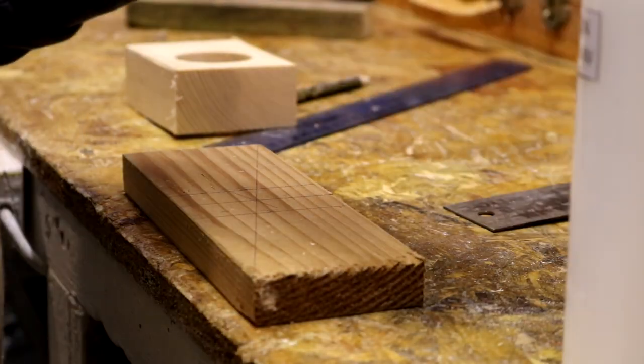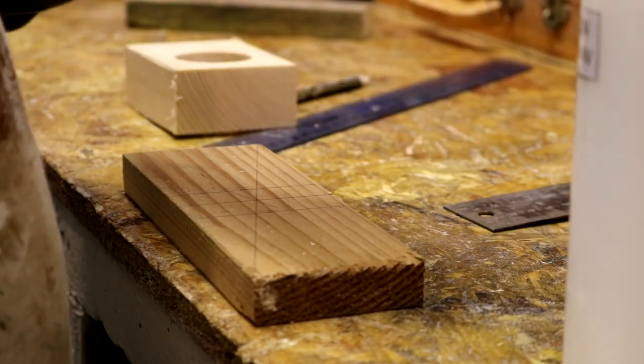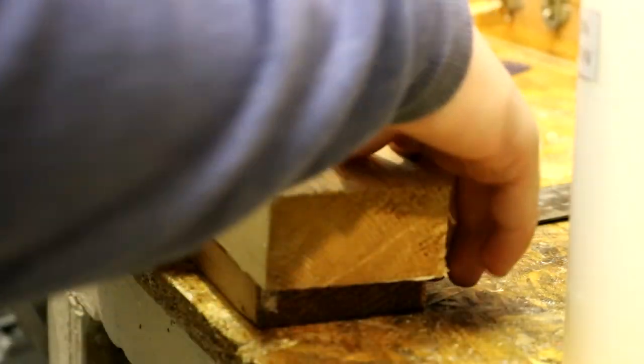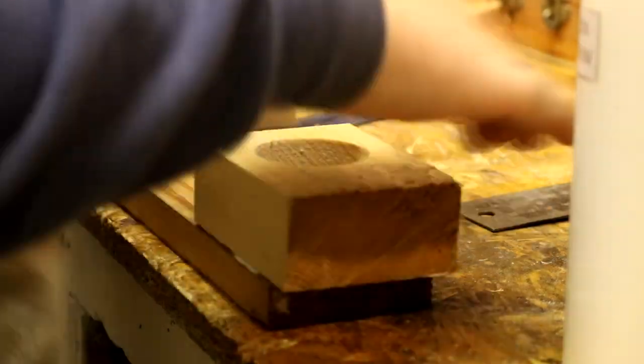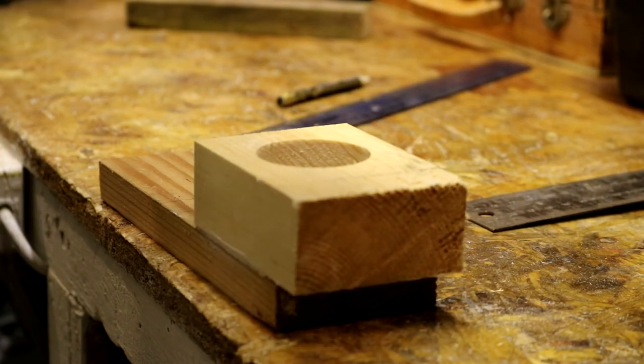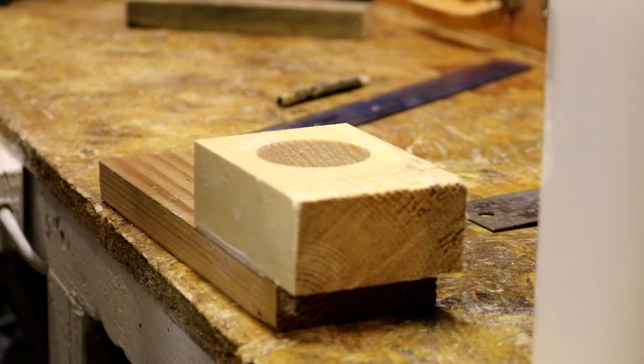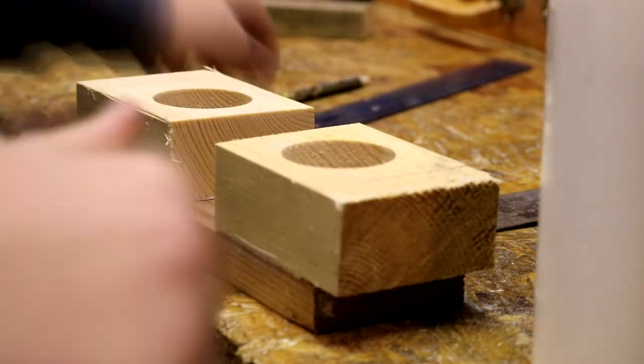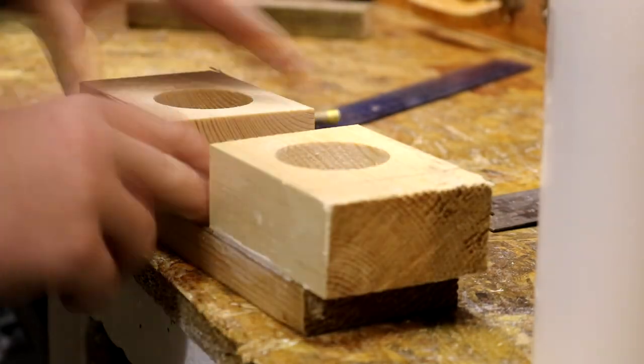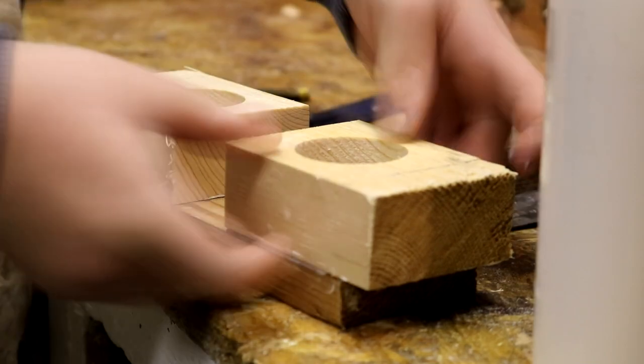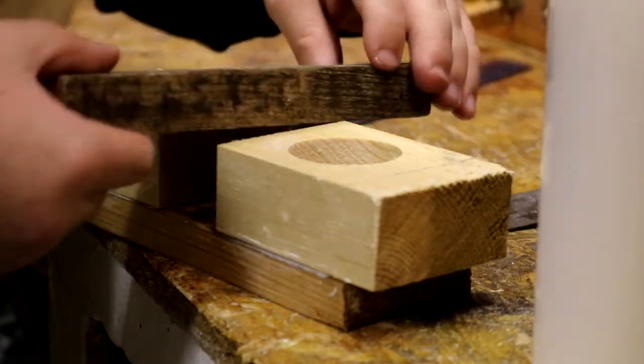I then glued on the center pieces to what is the back piece as I thought this would be easier than trying to glue it all up together, but it turned out this didn't really matter in the end as you will see later. For this I used quick clamps, but I don't think they clamped very well, which is what led to this coming off later in the process of making the mallet.